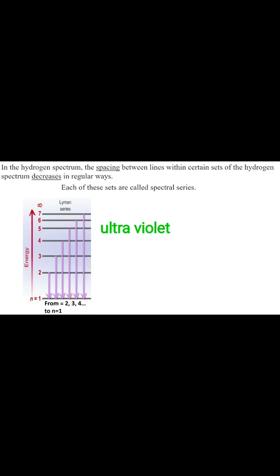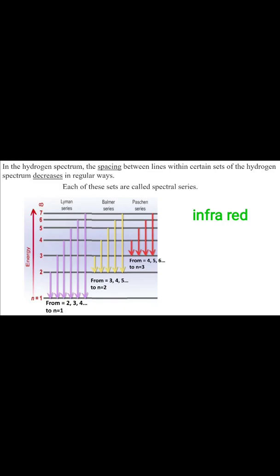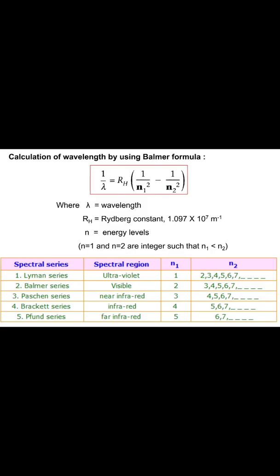For the Lyman series, which is in the ultraviolet region, the electron transitions are from N = 2, 3, 4 and so on down to N = 1. The Balmer series is in the visible light region, with transitions from N = 3, 4, 5 and so on down to N = 2. Next is the Paschen series in the infrared region, followed by the Brackett series, and lastly the Pfund series. The wavelength of the hydrogen spectrum can be calculated using the Rydberg formula.